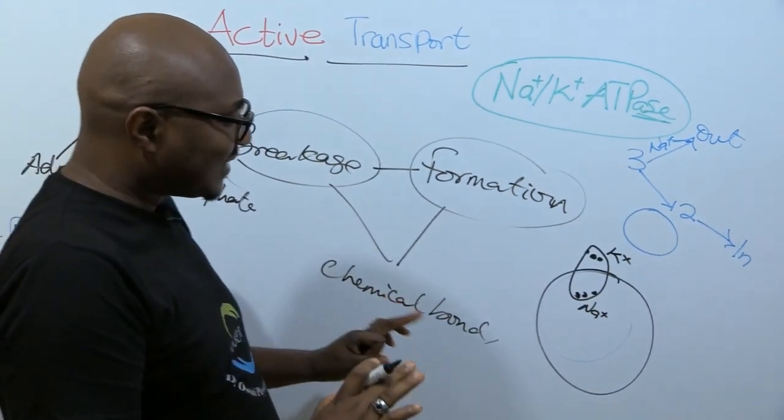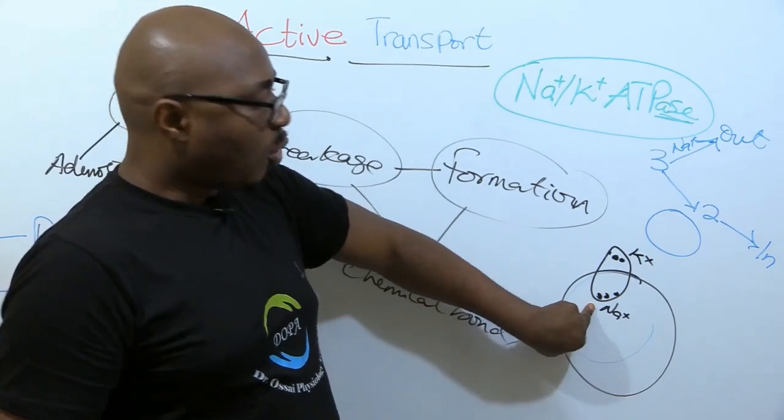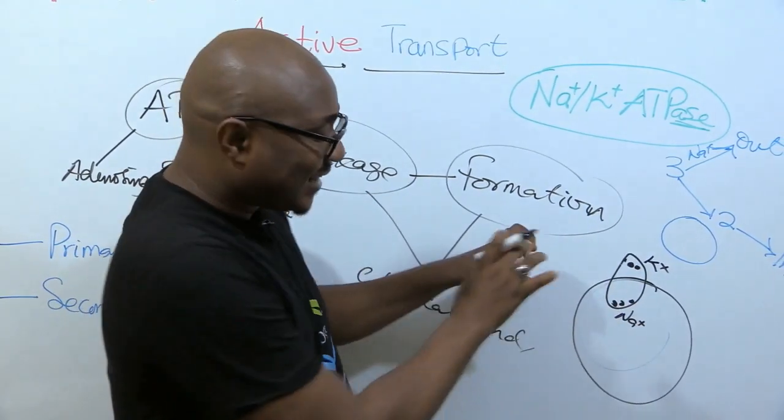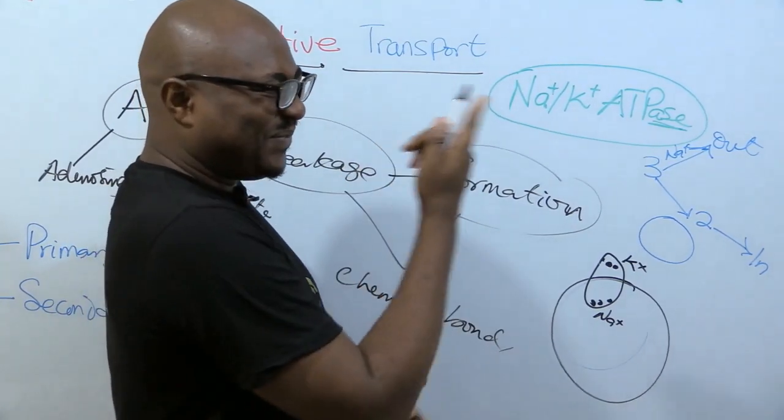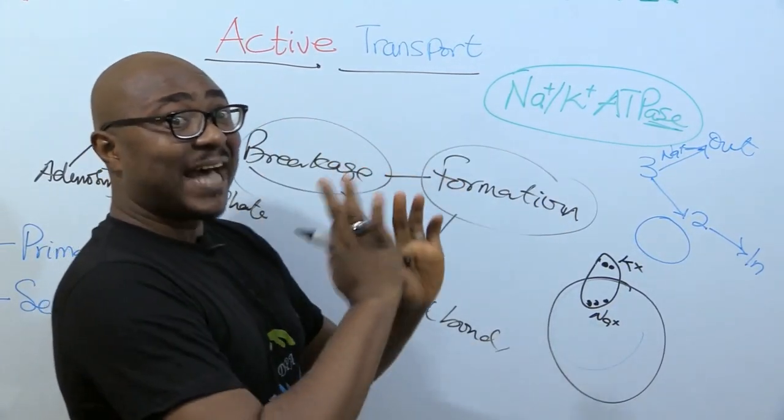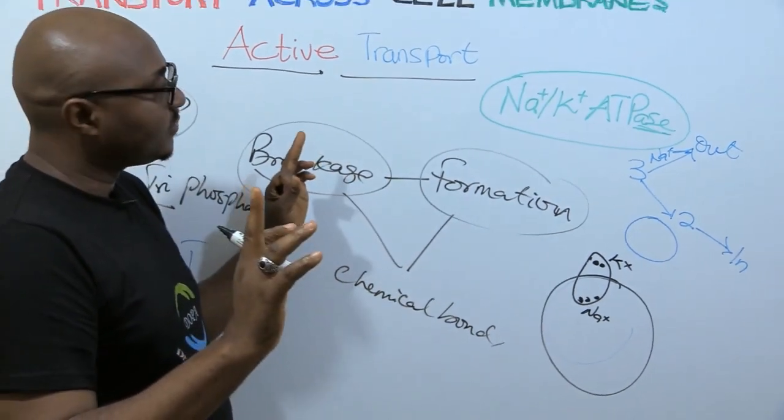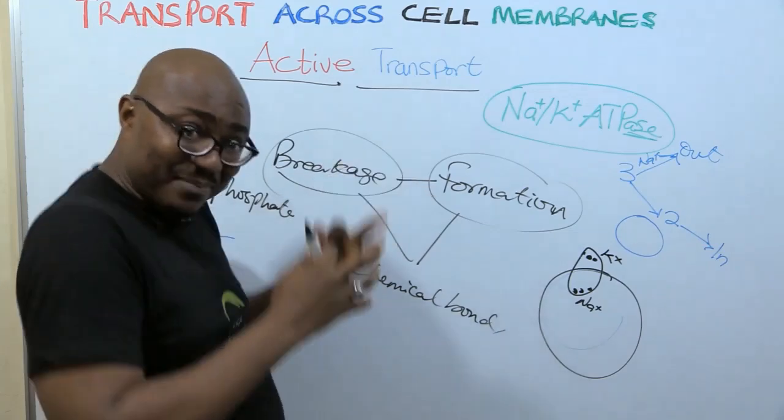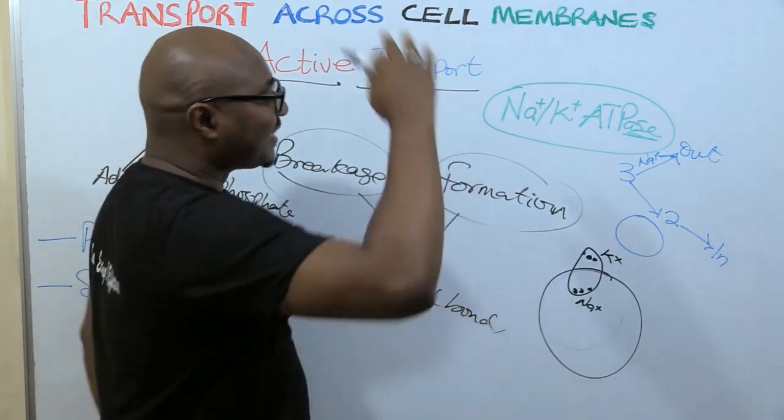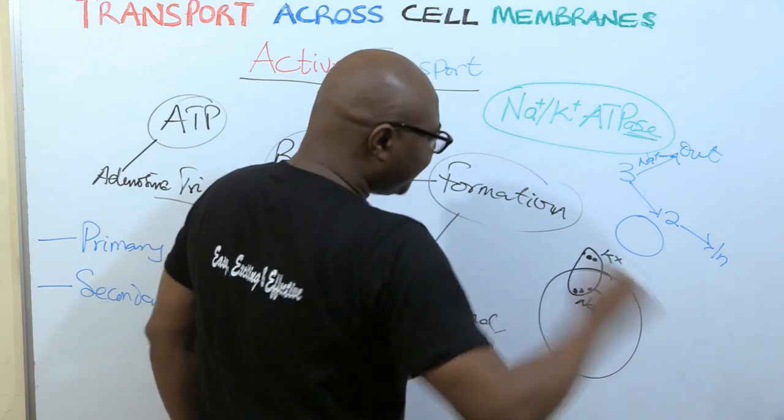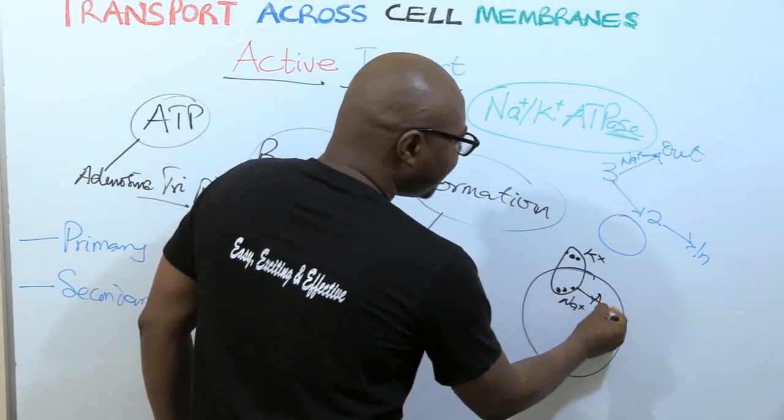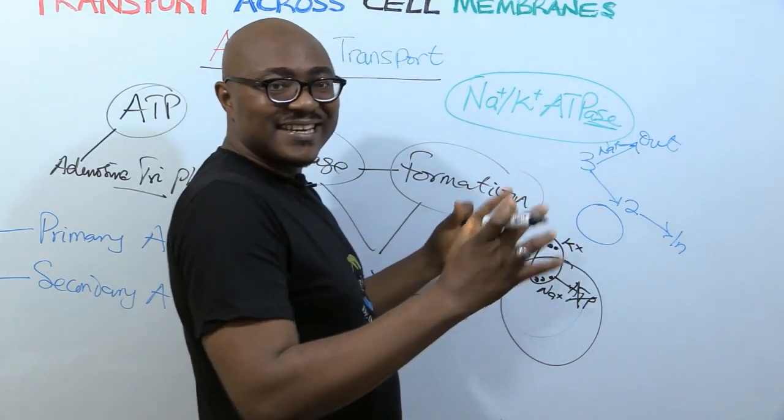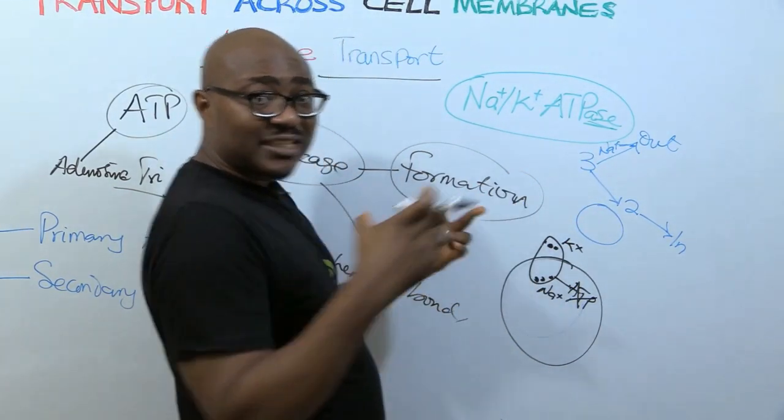This is the carrier protein. It's transmembrane. It has some parts outside, extracellular, parts inside. So what does it do? It wants to take sodium outside. So three molecules of sodium bind to the intracellular part of the carrier protein, and two molecules of potassium bind to the outside.